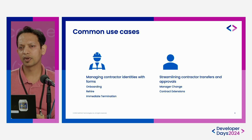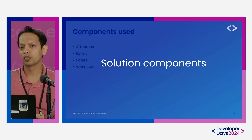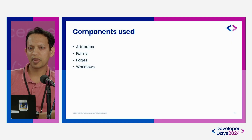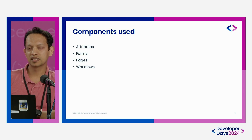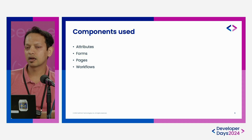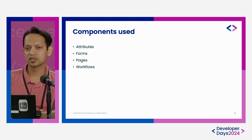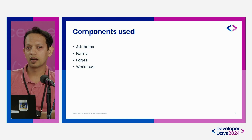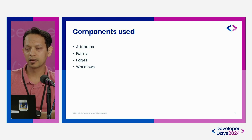A few of the key components I've used in my solutions are attributes, forms, pages, and workflows. Attributes are nothing but objects that store information about a profile — for example, first name, last name, email address. There are around 13 to 14 different kinds of attributes you can create in NIM, such as a text field, text area, drop-down, tags, checkbox, and radio button.